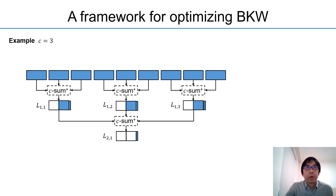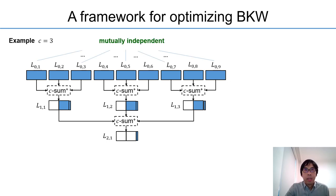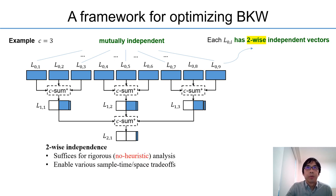In this work we give a tree-based structure for the BKW algorithm. The original LPN samples are divided into several subsets. These subsets are mutually independent. Within each subset the samples are only required to be pairwise independent. And this will enable sample optimization because we can use a small number of independent samples to generate a much larger number of pairwise independent samples. And in the meantime, the pairwise independence suffices to give a rigorous estimate of the complexities.